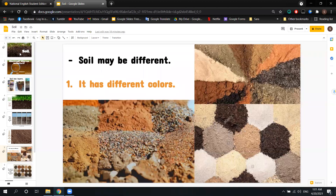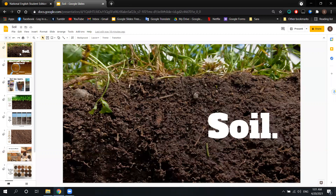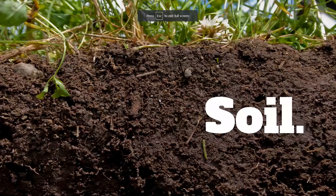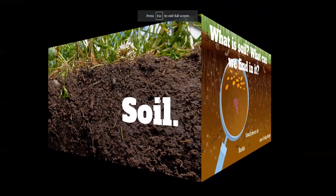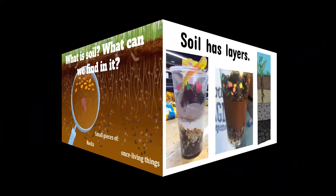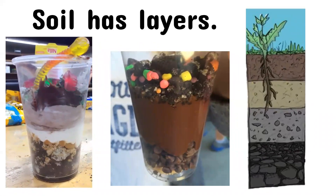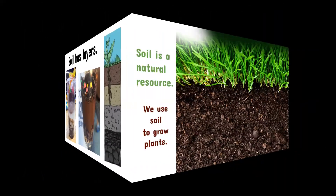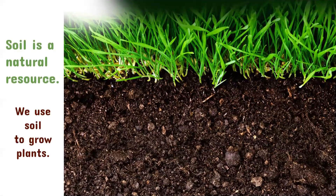Let me first do a quick review about yesterday's topic. We started talking about soil. We can find small pieces of rocks and once-living things in it, as you can see in the picture. Soil has layers, and soil is a natural resource. We use soil to grow plants.